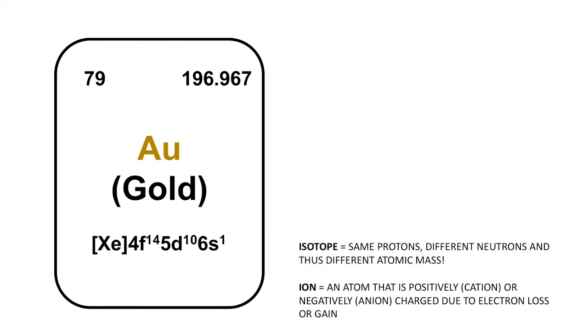Other things that we should know is that isotopes and ions exist. Isotopes represent the same element with the same number of protons but have a different number of neutrons and therefore a different atomic mass. For example, if we're looking at an isotope of gold, the atomic mass would change whilst the atomic number does not. We also have ions, which are atoms that are either positively or negatively charged. Positively charged atoms are referred to as cations and negatively charged ions are referred to as anions. This is due to either electron loss, causing a positive cation, or electron gain, causing a negative anion.